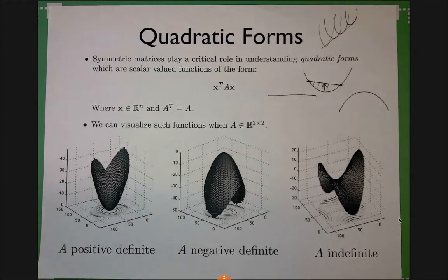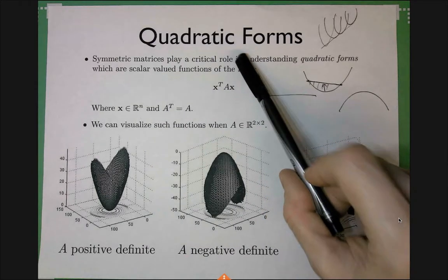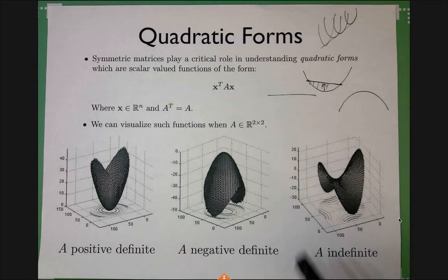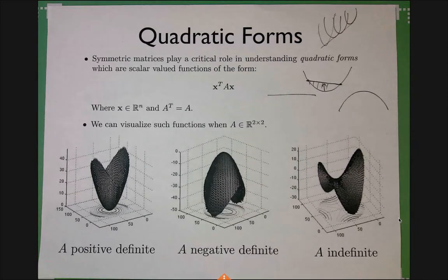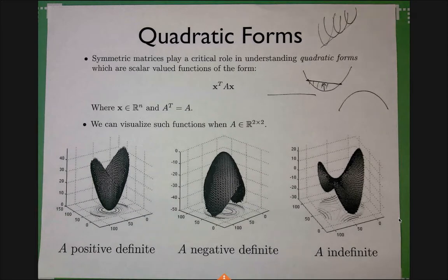Alright, so last time we started talking about symmetric matrices, and I was making the case that symmetric matrices are very useful and they naturally appear in some objects, like in quadratic forms. It naturally leads to a symmetric matrix. If you did not have a symmetric matrix to begin with, you can easily pick a symmetric matrix and have exactly the same quadratic form. You can just start with symmetric matrices to begin with.